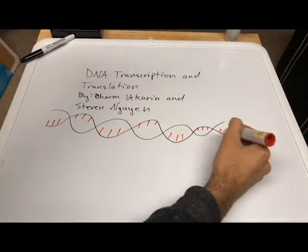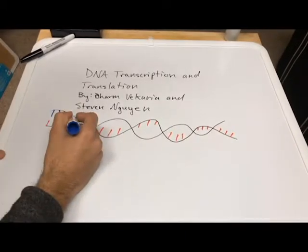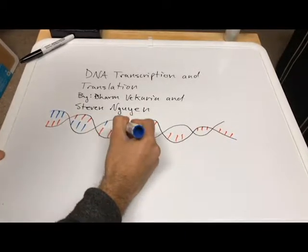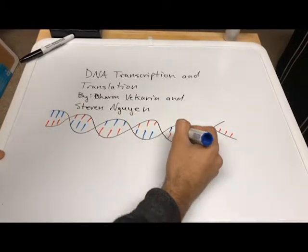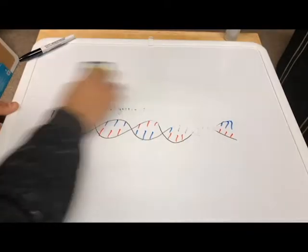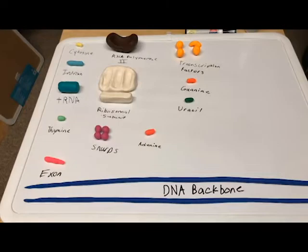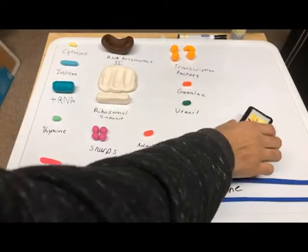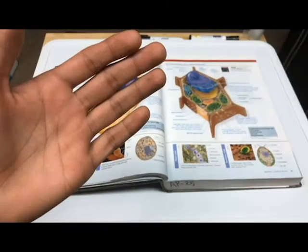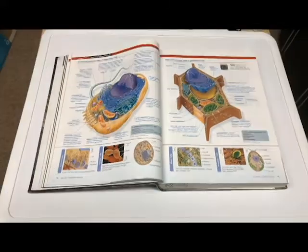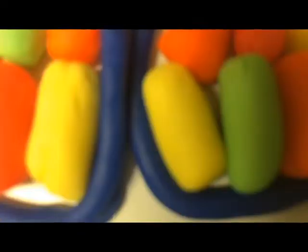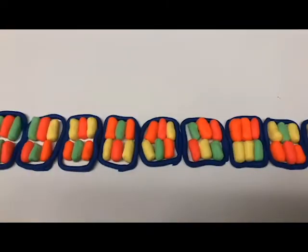Deoxyribonucleic acid contains your genetic code. DNA is a molecule that makes up all your chromosomes, with a double helix structure — a two-stranded spiral. It's a set of instructions for your cells so that they know what to do, like send signals and make new ones. They get proteins from amino acids.